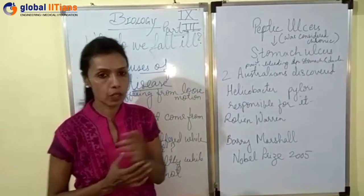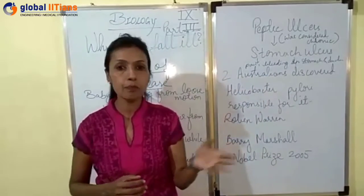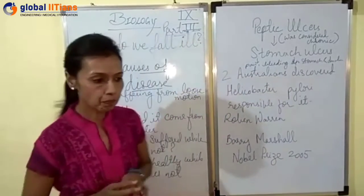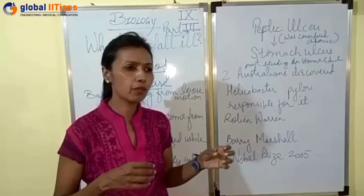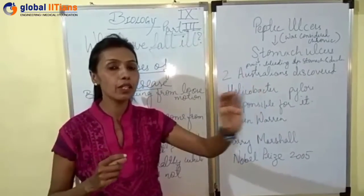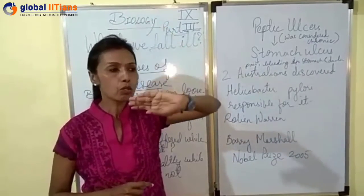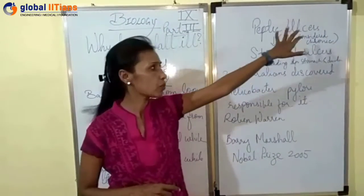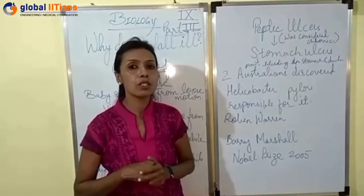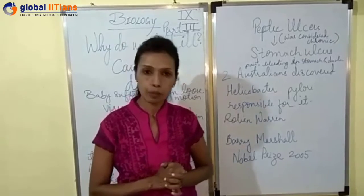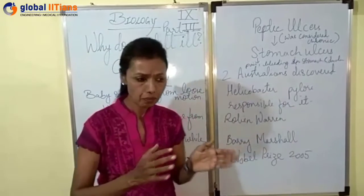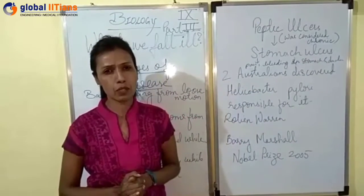Earlier, peptic ulcers — stomach ulcers — were considered a common chronic disease that remains in the body throughout the lifetime of a person. People used to think that due to a stressful life, not having proper meals, not having proper sleep, a person usually suffers from peptic ulcers. What actually happens in peptic ulcers is a person suffers from stomach pain and internal bleeding in the stomach.